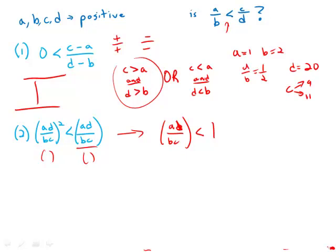So now multiply both sides by bc, and what we get is ad is less than bc. We'll divide both sides by b. So now we get a over b times d is less than c.